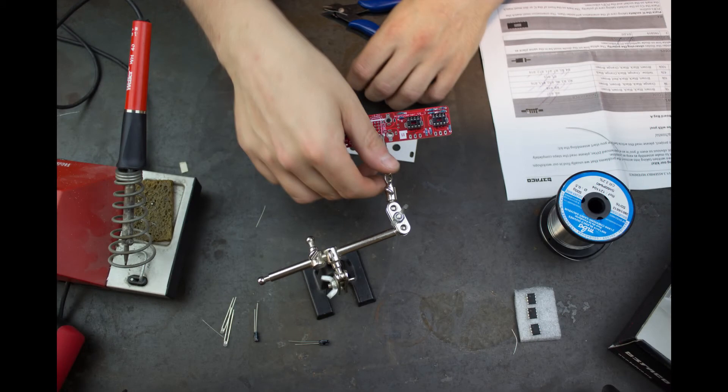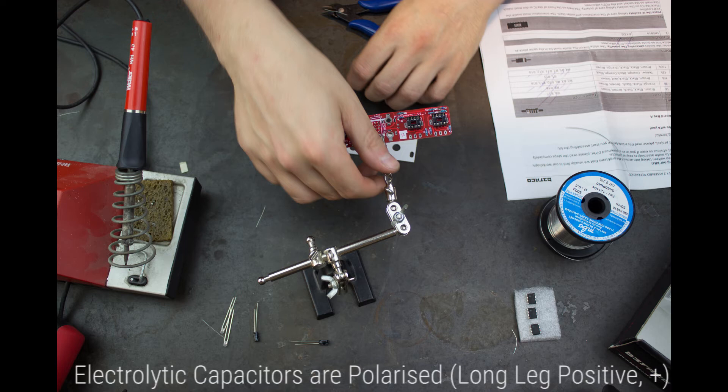In this project we have two types of capacitors, the two small yellow multi-layer ceramic fellows, which are not polarized, and the two cylindrical electrolytics which are. On the silkscreen there will be a small plus or minus to indicate the polarity for the electrolytics, and remember that the long leg is the positive.